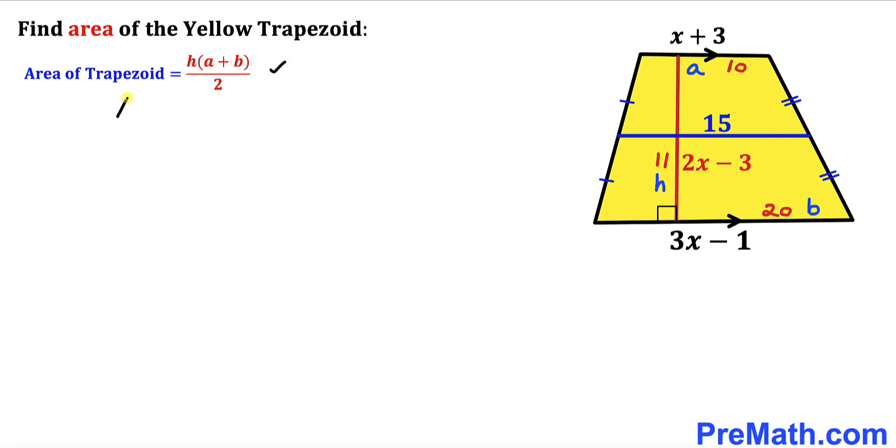So the area I'm going to represent it with A equals to height is 11 times a is 10, b is 20, all over 2. So let's go ahead and simplify the right hand side.